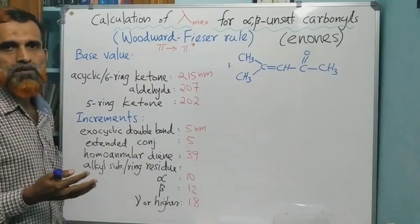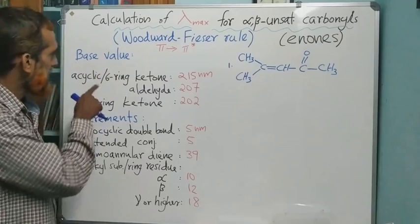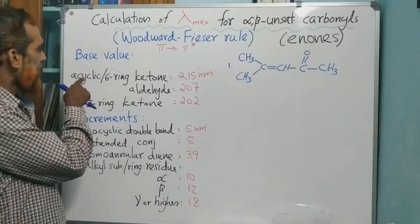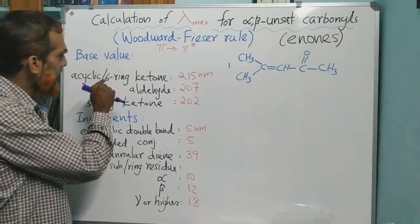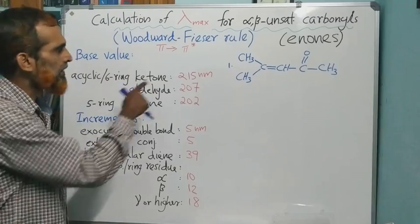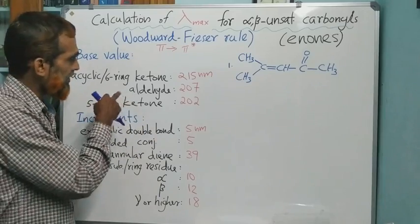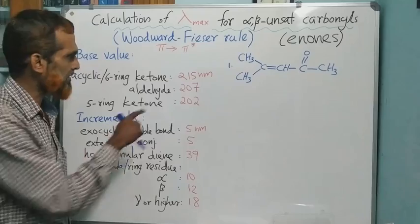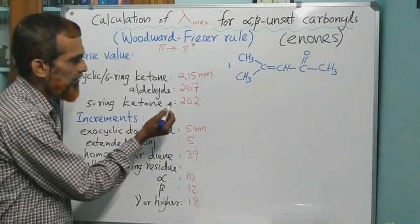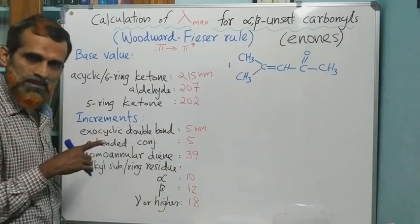First let us look into the standard values, which has two parts. One is the base value — we fix the basic compound and take the base value. If the compound is acyclic or a six-membered ring ketone, the base value is 215 nm. If it is an aldehyde, it is 207 nm. For a five-membered ring ketone, the value is a little lesser at 202 nm. Then we add the increments.